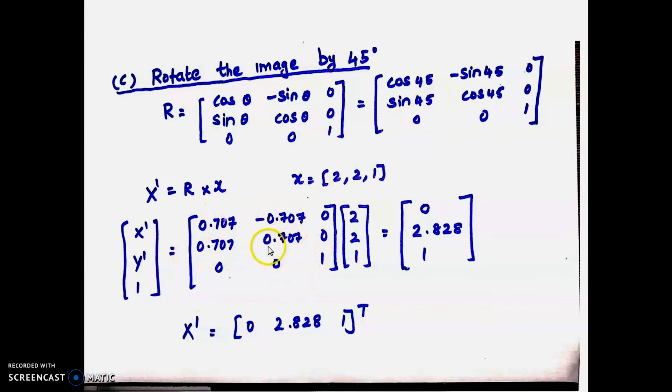The new coordinate is x' = R × x, where x = [2, 2, 1]. The left side matrix is the new coordinate. Substitute this matrix with the values, then the image point. Do matrix multiplication, we get [0, 2.828, 1]. So x' = [0, 2.828]^T or approximately (0, 2.83).